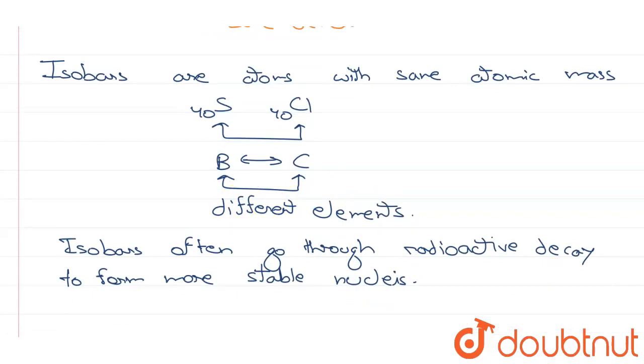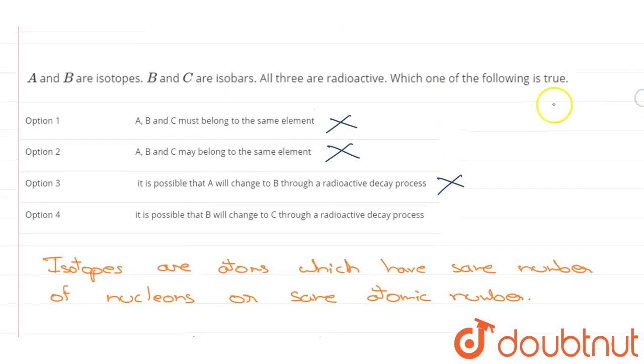Therefore, B and C might interchange. Therefore, it is possible for B to change into C through a radioactive decay process. Therefore, option number 4 is correct.